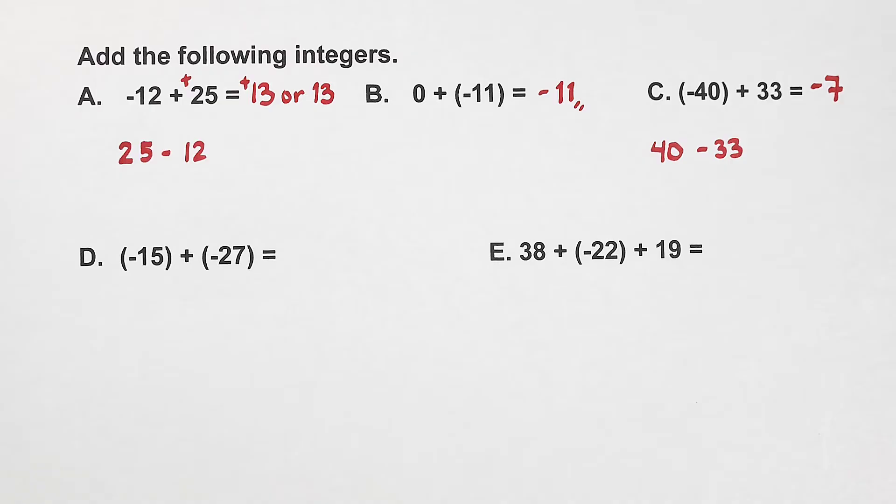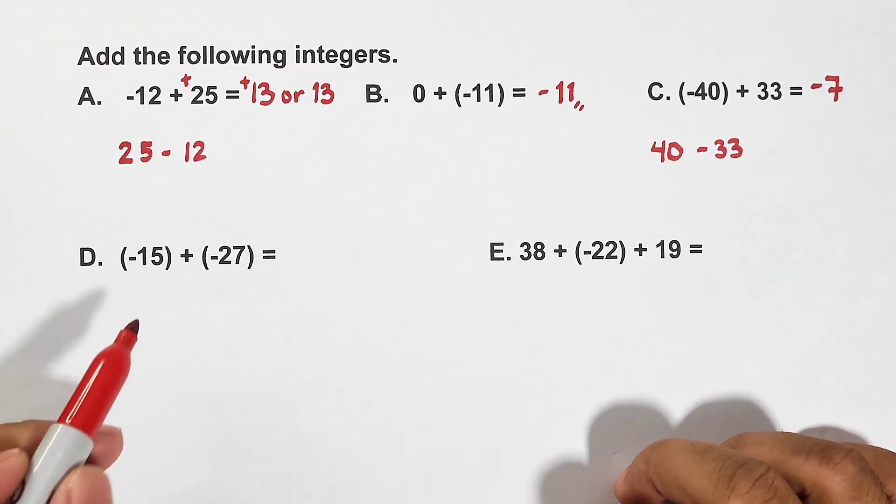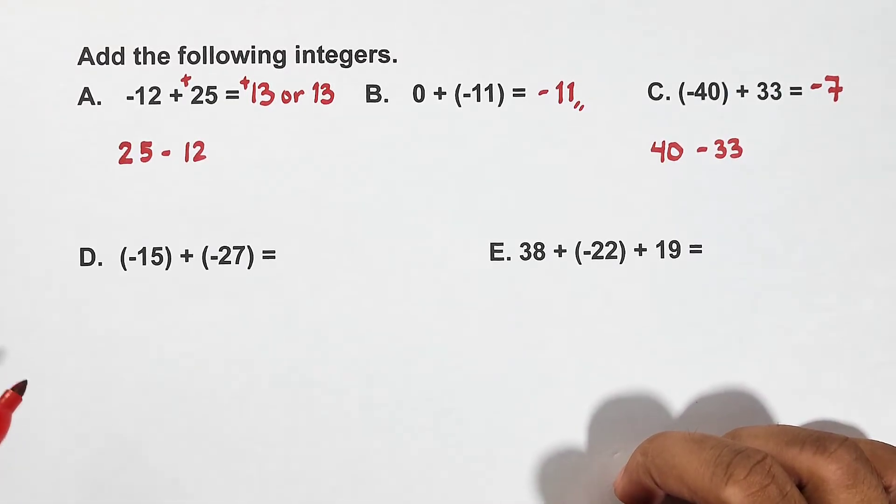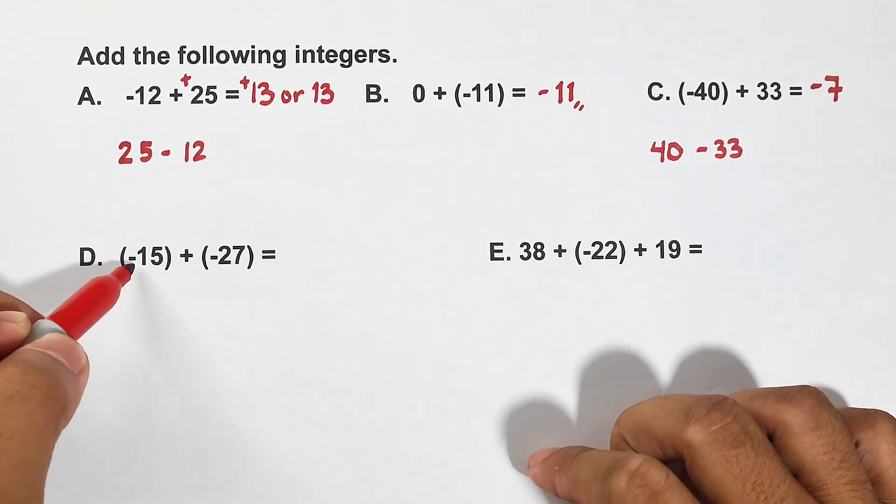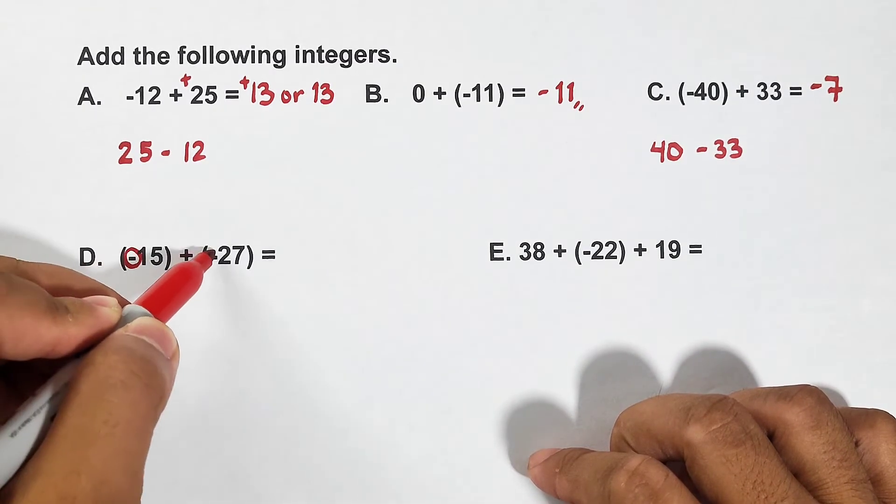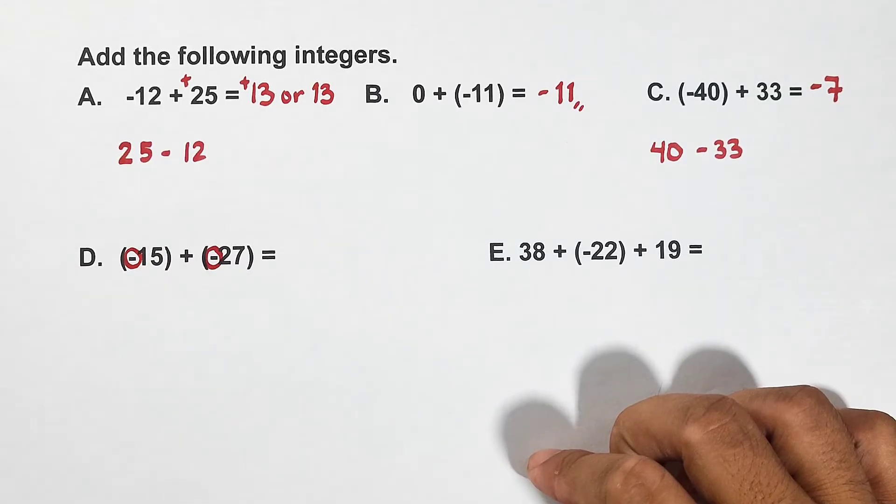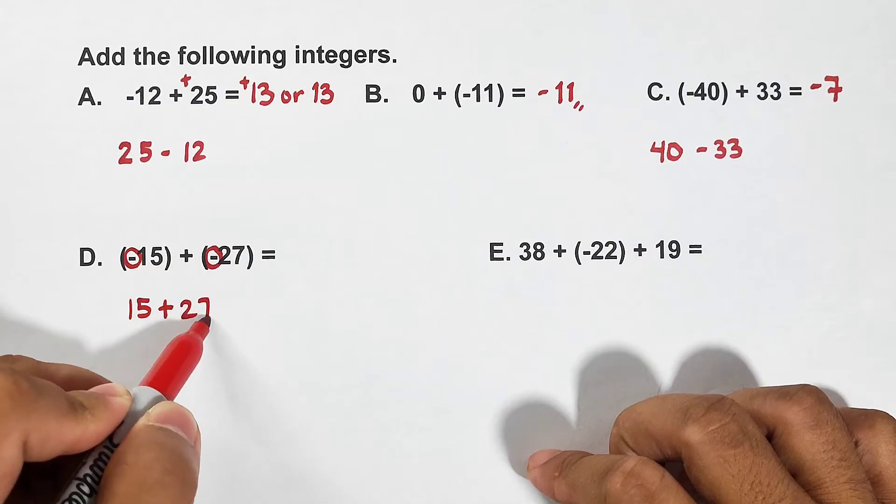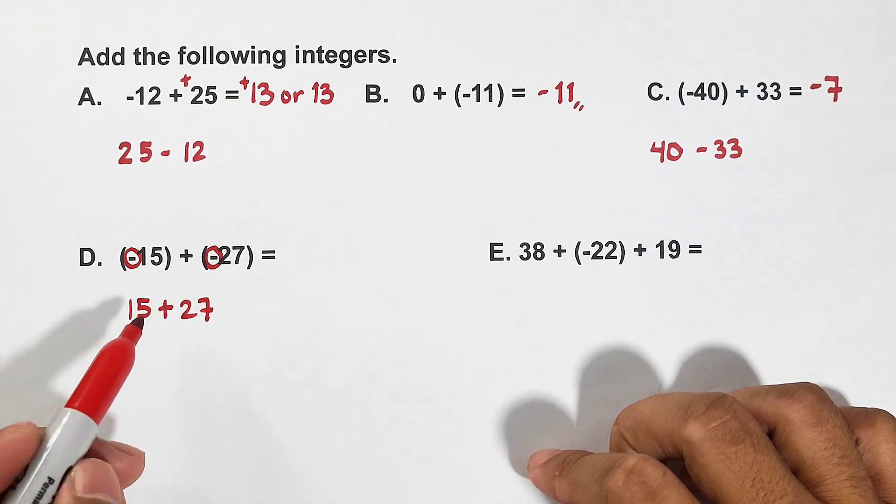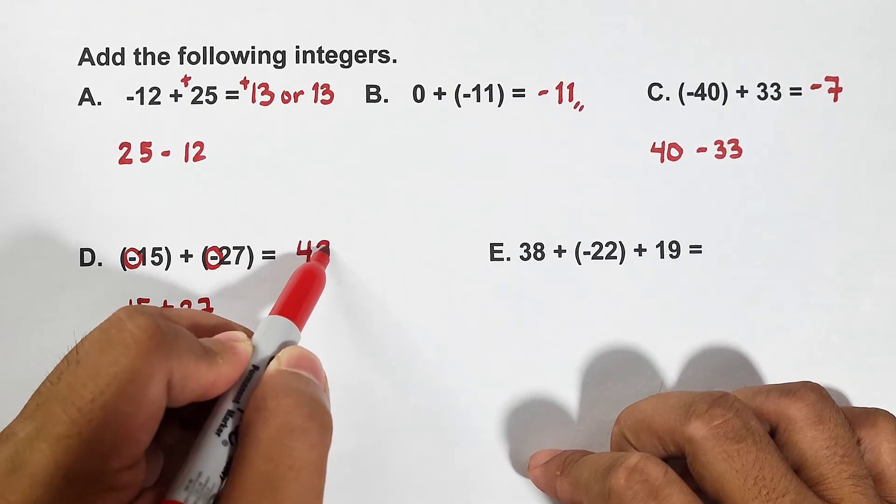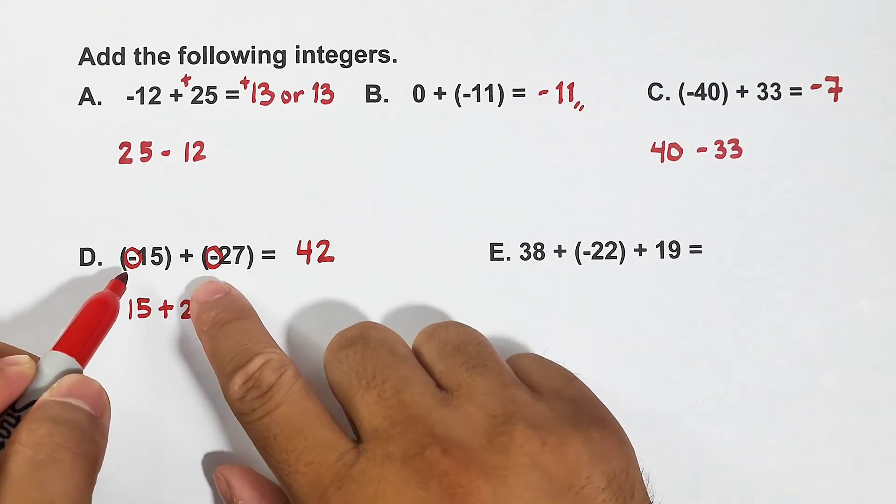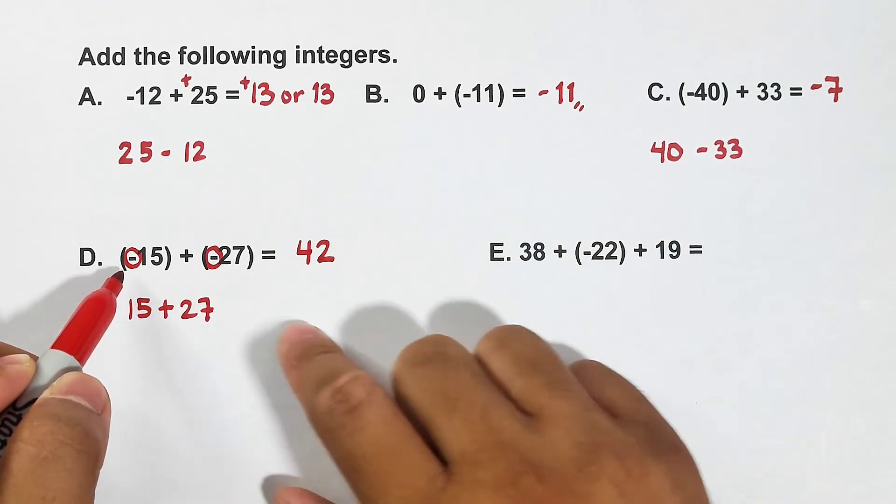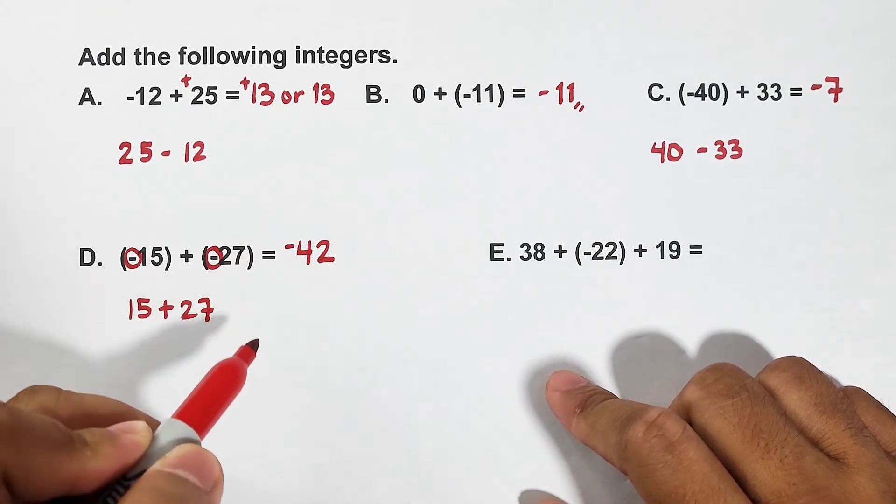Okay guys, let's go with letter D. Negative 15 plus negative 27. As you can see, they're both negative. When they're both negative, just add the numbers. You have 15 plus 27. The answer is 42. And the two numbers have negative sign, therefore this is negative.